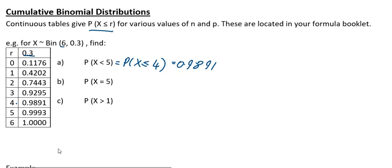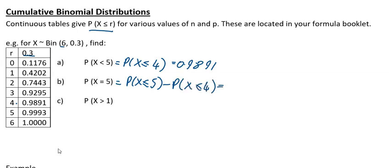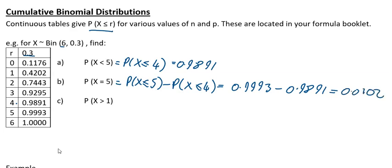Now if you want to find P(X = 5) using the tables, this is the same as P(X ≤ 5) minus P(X ≤ 4). That gives 0.9993 minus 0.9891, which equals 0.0102.